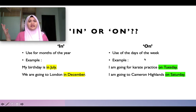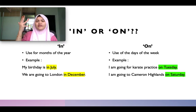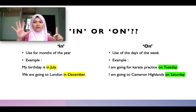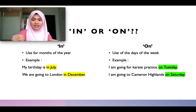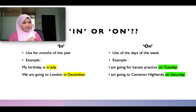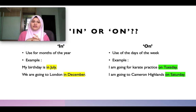For 'on', we use 'on' for the days of the week. There are seven days in a week: Monday, Tuesday, Wednesday, Thursday, Friday, Saturday, Sunday. For example: 'I am going for karate practice on Tuesday' — Tuesday is a day of the week, so we use 'on'. 'I am going to Cameron Highland on Saturday' — Saturday is a day of the week, so we use 'on'.